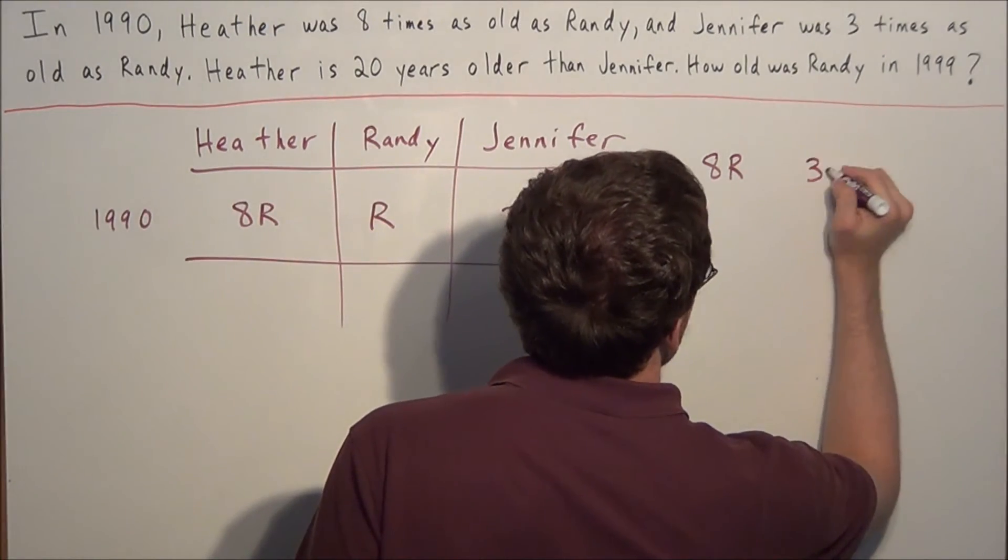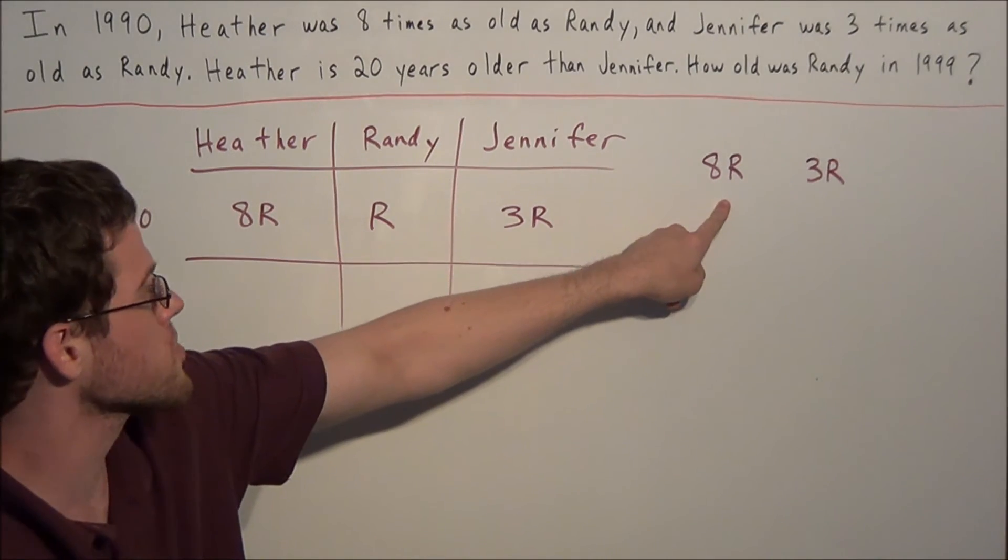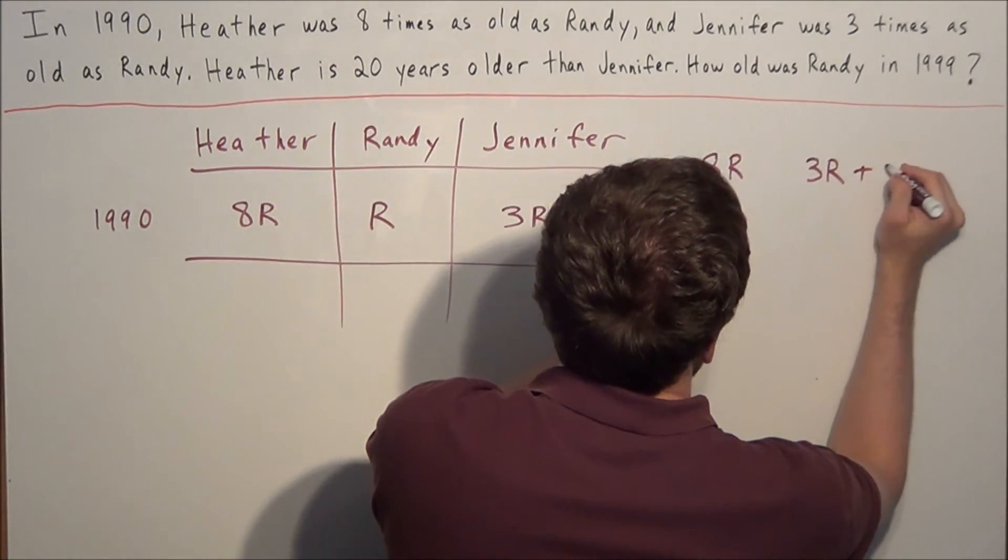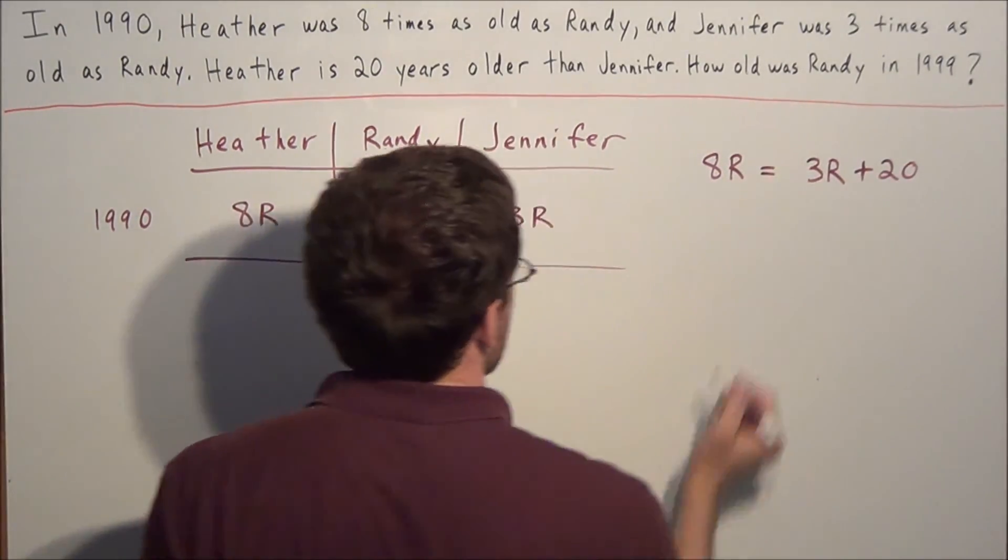3r, we're told that Heather is 20 years older than Jennifer. So if we add 20 years to Jennifer's age, then those ages would match. So now we can set them equal.